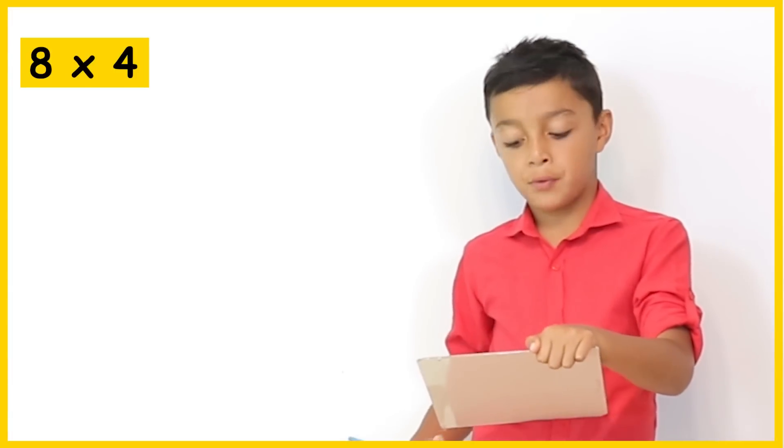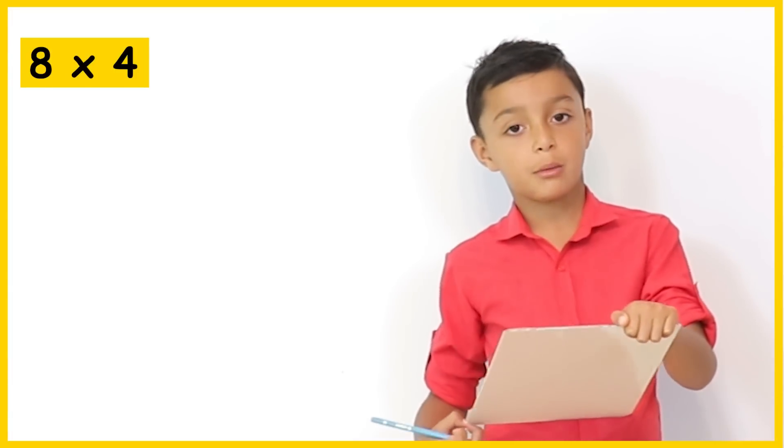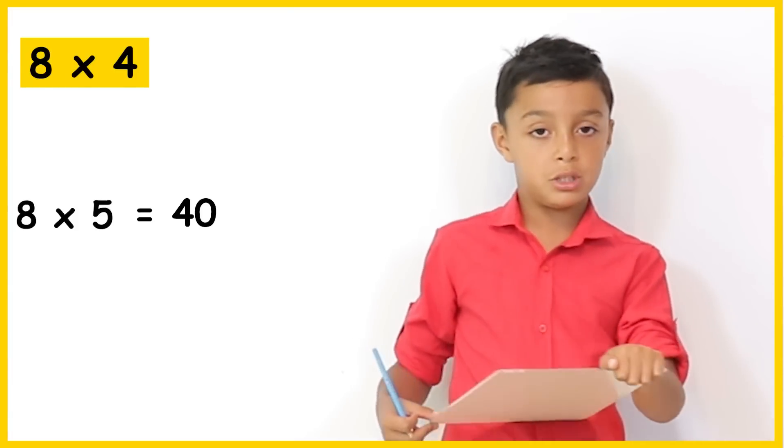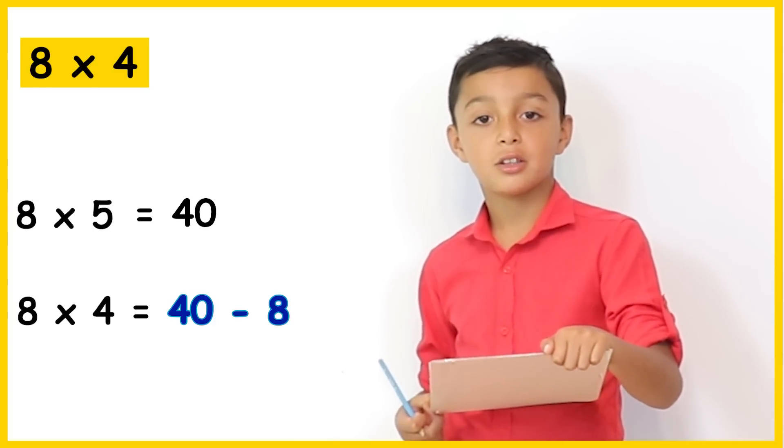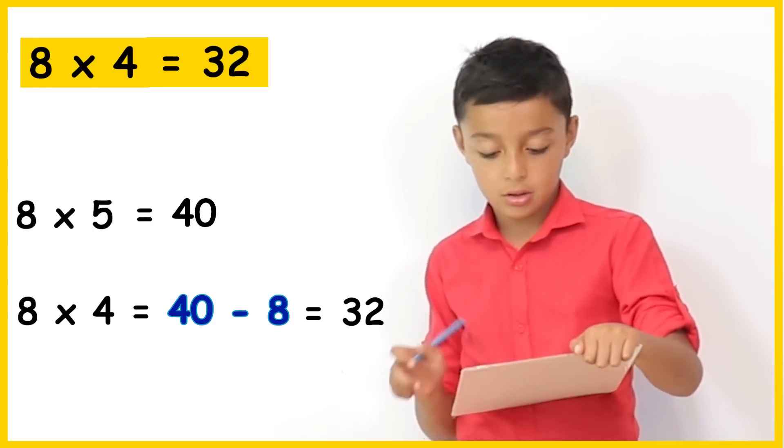8 times 4. So if we do 8 times 5 it equals 40 and then we do 40 take away 8 which is 32. Excellent.